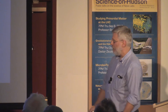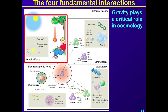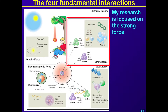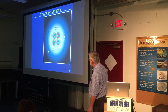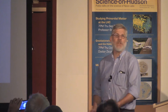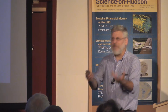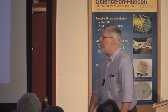The mediator of the strong interaction is the gluon. Gravity plays a critical role in cosmology, but my research is focused on the strong interaction. So here we are back to the structure of the atom — and those quarks, because of the nature of the strong interaction, have this problem that they can't actually be observed as free particles. The term we use is 'confined' inside the protons and neutrons, which is very inconvenient because we particle physicists like to be able to look at particles, play with them, and study them.